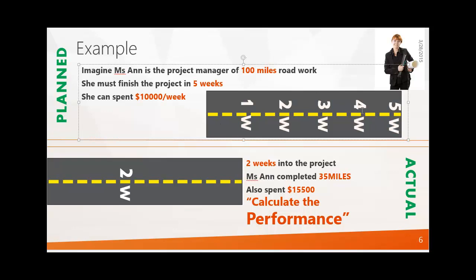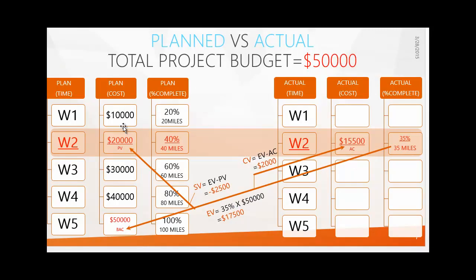Looking at the graphic, you can see the road: in week one she has to complete up to a certain point, then week two, three, four, and by week five she has to finish the project. Now, what happened in actual? Two weeks into the project, Miss Ann completed 35 miles and spent fifteen thousand five hundred dollars. This is the information we got from the site — now it's time to calculate performance.